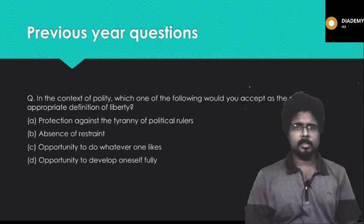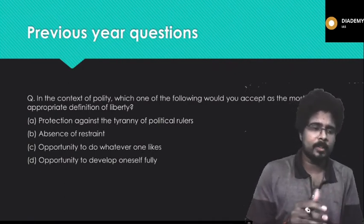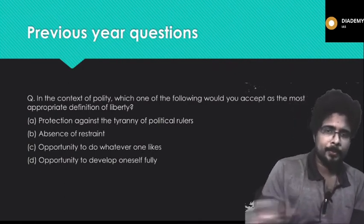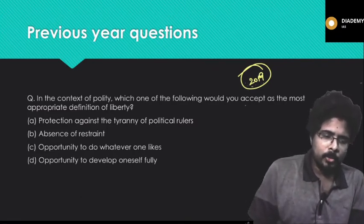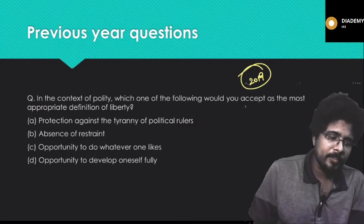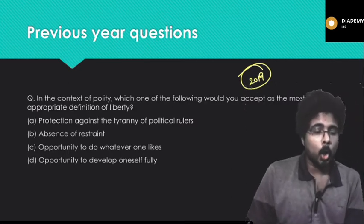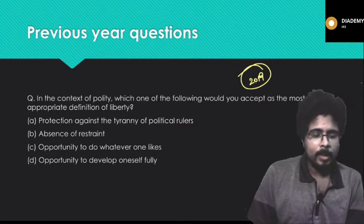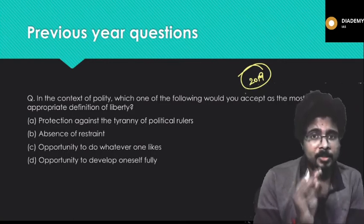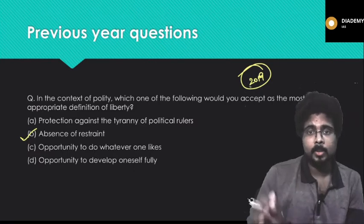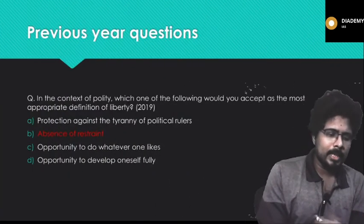Now let us see the previous year questions. The 2019 question asks: 'In the context of polity, which one of the following would you accept as the most appropriate definition of liberty?' Options: a) Protection against tyranny of political rulers, b) Absence of restraint, c) Opportunity to do whatever one likes, d) Opportunity to develop oneself fully. The correct answer is b — Absence of restraint. Liberty's basic definition was directly asked, and if you know the concept, you can get the marks very easily.